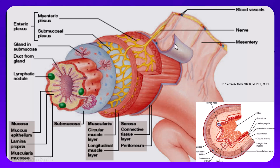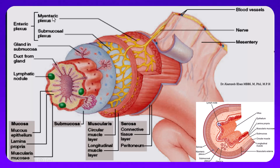The outermost layer is the serosa. The first muscular layer travels transversely along the whole length of the GI tract and is called the longitudinal muscle. The other muscular layer is circular, running circularly along the length of the GI tract. Between these two muscle layers — the longitudinal and circular — there are neuronal plexuses called the myenteric plexus. Below the muscular layer is the submucosa, which contains secretory glands, and the innermost layer is the mucosa, which contains villi.